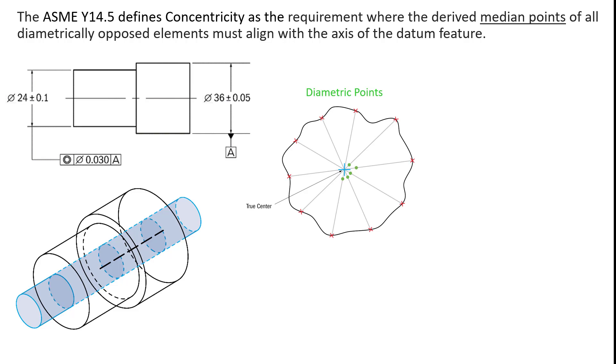Going back to that definition of diametric points, in order to inspect this we're going to drop our CMM down and probe a point here, then take the diametrically opposed point. We go 180 degrees around and probe this one. Once we get that, it gives us the median point between those two probed outside surface points.